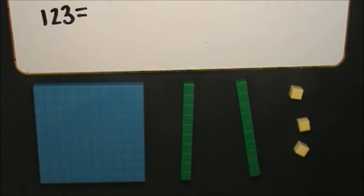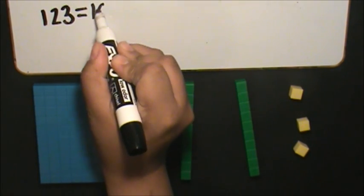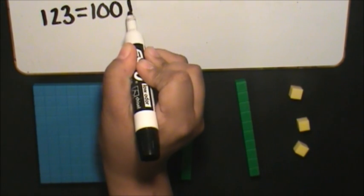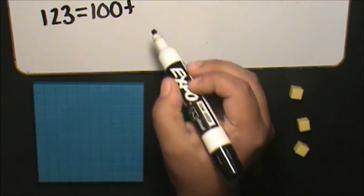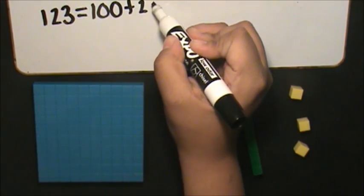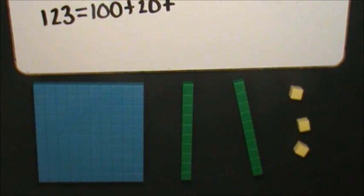I will represent the number in expanded form. The value of 1 hundred is 100. The value of each 10 is 10, 10, 20. The value of each one is 1, 1, 2, 3.